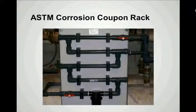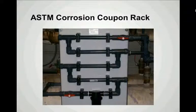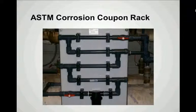One way to measure our success in corrosion control is to actually measure the corrosion rates. Here's an example of an ASTM corrosion coupon rack. Inserted inside the rack, we install corrosion coupons — small metal specimens — and expose them to the flow of water through the system via a small loop from the condenser water system. We leave the coupons in place for 90 days normally, and at the end of that test, we take the coupons out, clean and re-weigh them, and calculate the corrosion rate in mills per year of metal loss.